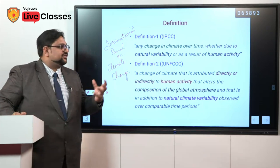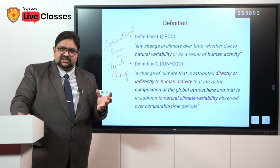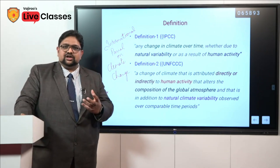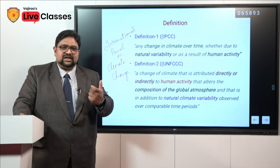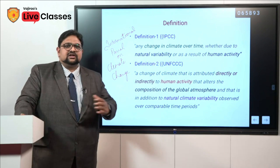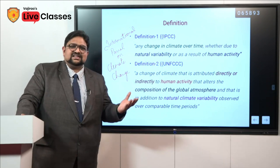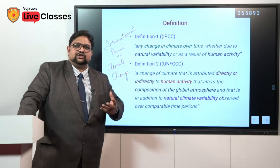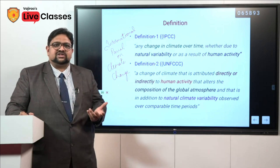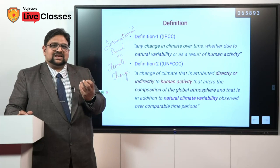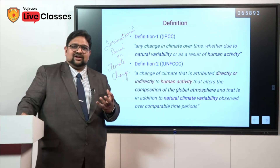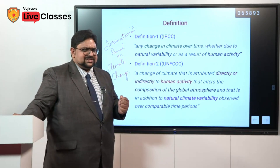According to IPCC, climate change is a change in climate over time — not a small duration. We take the data of around 100 to 150 years and compare the change in temperature against that baseline. Generally when talking about climate change, we consider the pre-industrial era and post-industrial era: what kind of climate existed before industrialization and what has happened after that. That is the first definition.